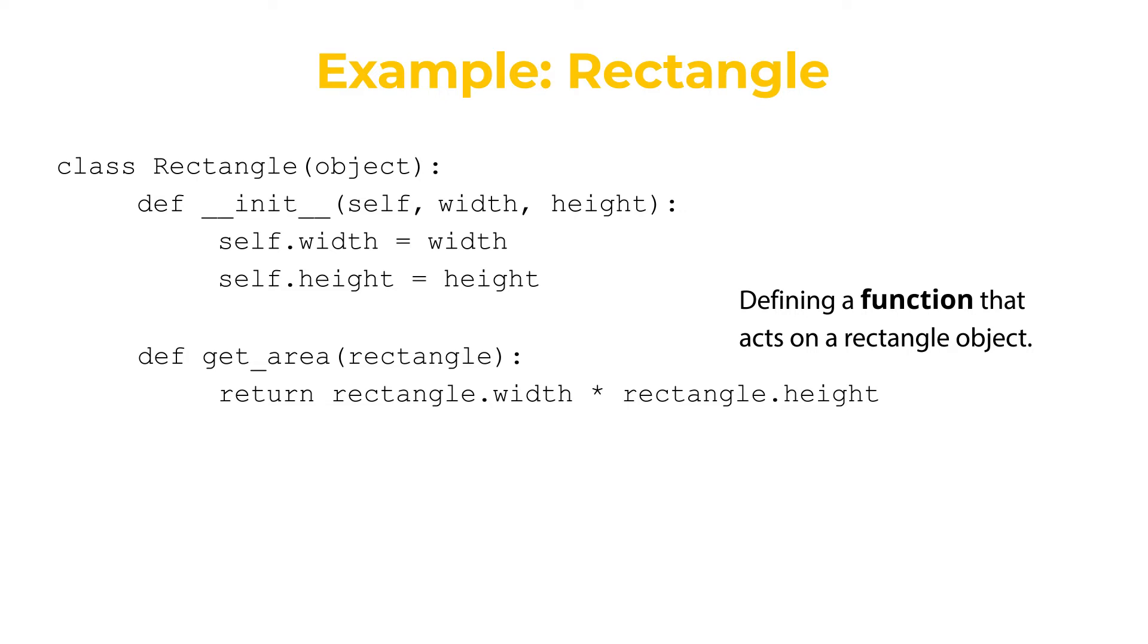To use this function, we can create a rectangle object. r equals Rectangle(3, 5), which creates a rectangle of width 3 and height 5. And then we can do something like print the area is get_area(r). This is the function way of doing things.